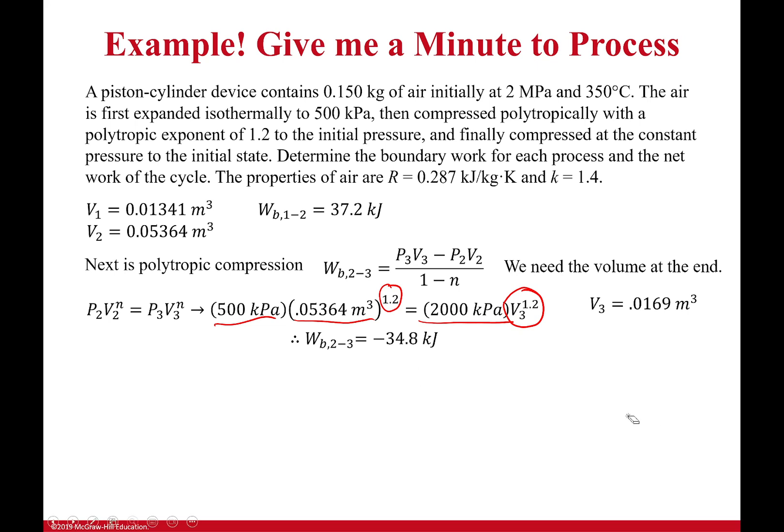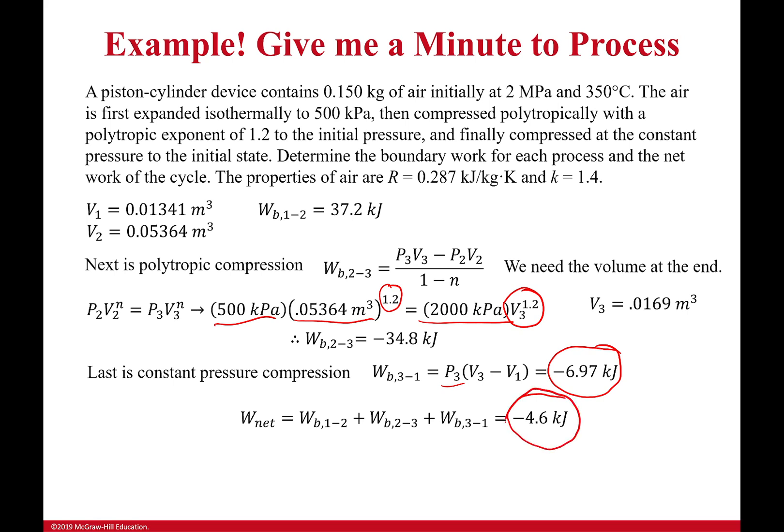The last one was a constant pressure process, and so it has a very easy equation. It's simply equal to my pressure for that process times the change in volume. We already have all our volumes because we calculated them all. We already know what our pressure is. We just plug that in and we get negative 6.97 kilojoules, which means that my overall work, my net work for this process is negative 4.6 kilojoules. That means it takes work to make this process run.